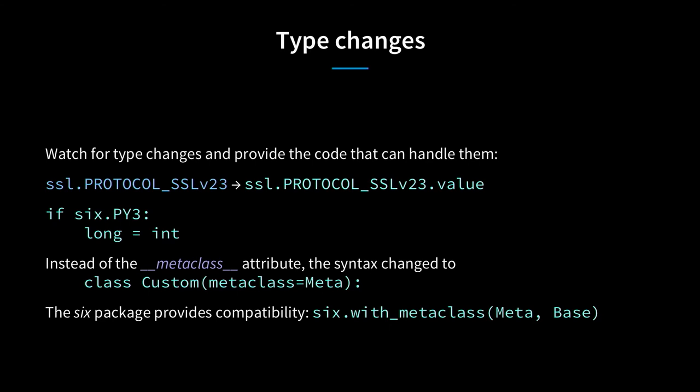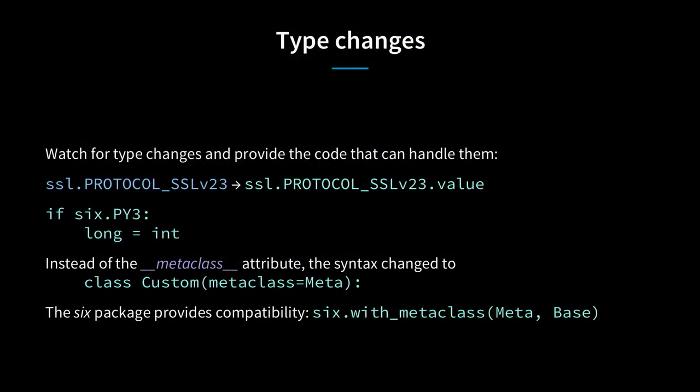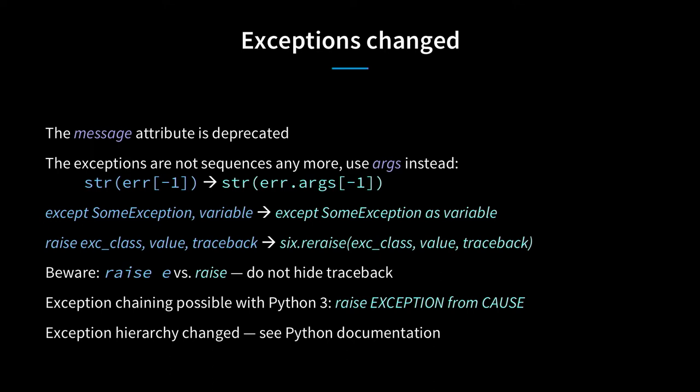Types changed: SSL strings changed into an enum, so you have to account for that with try/except or `if six.PY3` use the enum, otherwise use the other. Sometimes code really needs `long` in Python 2 but that would be a syntax error in Python 3. The workaround: `if six.PY3: long = int`, put that at the top of the module. Metaclasses were changed—you no longer put the `__metaclass__` attribute on a class; you pass it as a parameter. `six` will help again—`six.with_metaclass` or `six.add_metaclass` decorator. Exceptions changed: use `error.args[-1]` instead of `error[-1]`, use `except Exception as e` instead of `except Exception, e`. Re-raising: use plain `raise` to avoid hiding the traceback. In pure Python 3, you can use `raise exception from cause` for a nicer chained traceback.